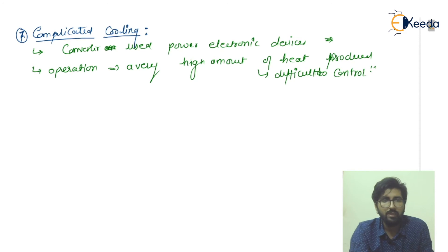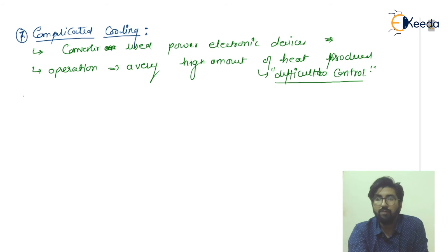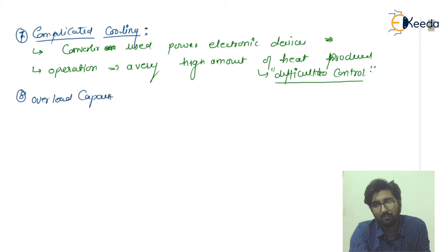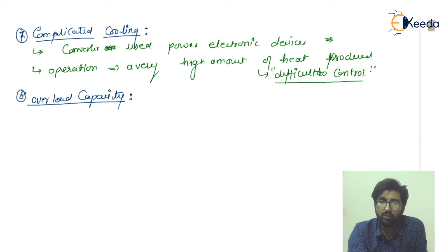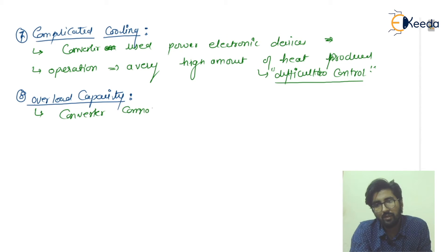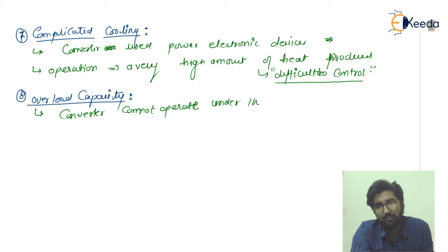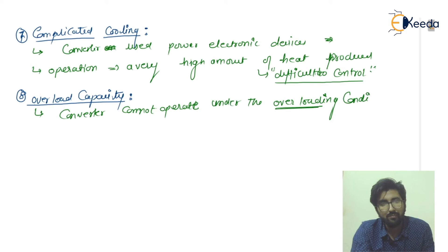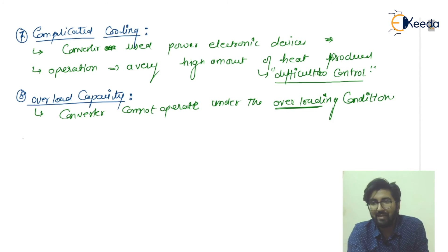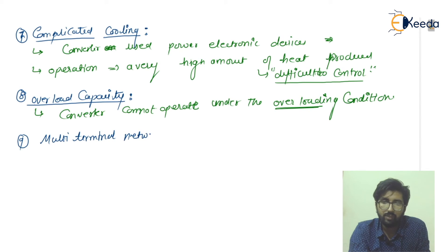Point number eight is overload capacity. The converters in HVDC systems cannot operate under overloading conditions — there is a risk of failure of operation for the converters when overloading conditions occur. This is a notable limitation compared to AC transmission systems.